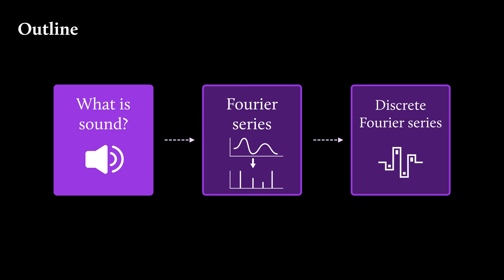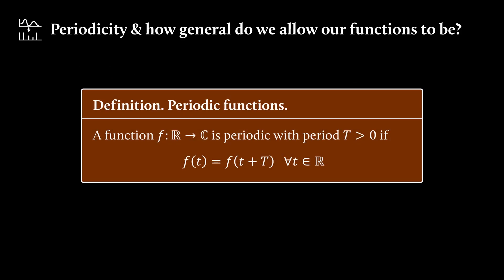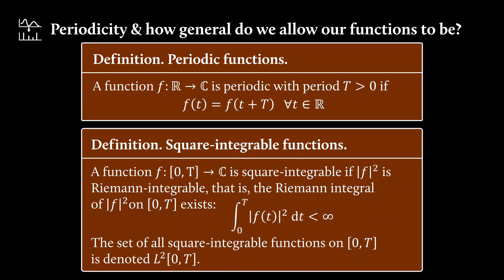Before we really dive in, let's first define some basic notation. We have periodic functions, where the values repeat after some period. And then we also deal with square integrable functions and the function is square integrable if the Riemann integral of the absolute value squared exists on that interval.